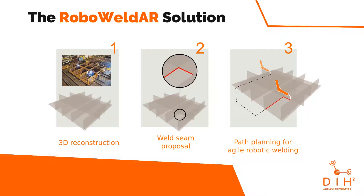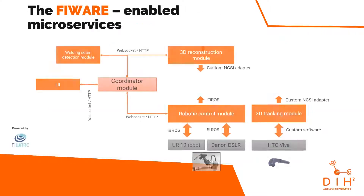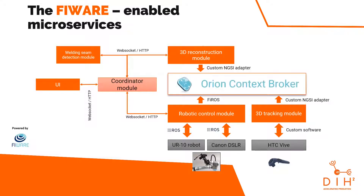Our software architecture is based around the FIWARE ecosystem, with the Orion Context Broker enabling the logging and visualization of data on the Grafana platform, which is powered by ramp.eu.